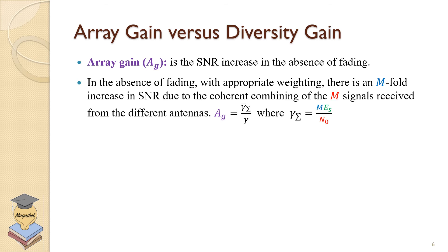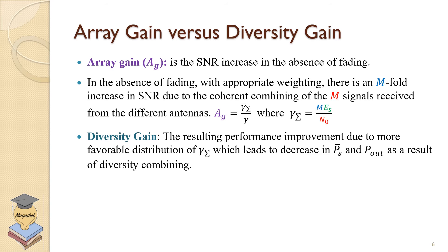You can also define the diversity gain. The diversity gain is the resulting performance improvement. It comes as a result of the differences between the branches, the resulting performance improvement due to more favorable distribution of gamma, the signal-to-noise ratio.